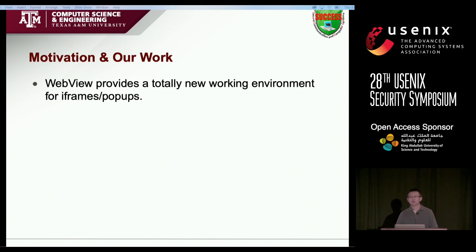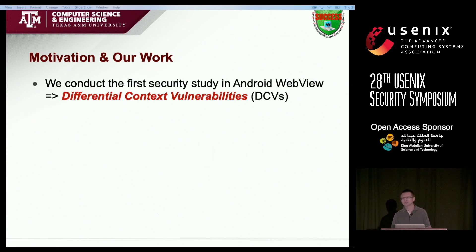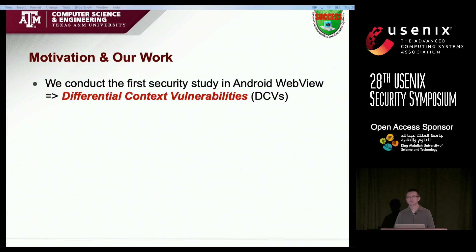Motivation: we found WebView provides several unique features, and these features heavily impact the behaviors of iFrame pop-ups. So a security question is raised: are iFrame pop-ups still safe in this new web environment? Motivated by this research question, we conducted the first security study on the security of iFrame pop-up behaviors in Android WebView. As a result, we found several critical and fundamental design flaws, and vulnerabilities. We call these vulnerabilities Differential Context Vulnerabilities, or DCV for short.